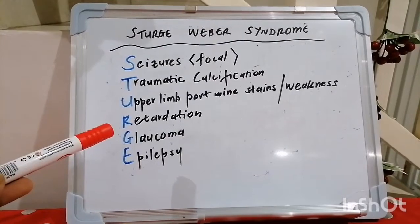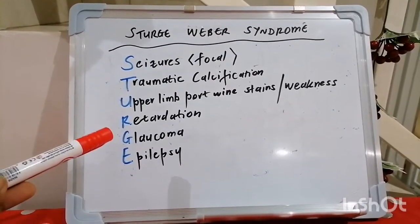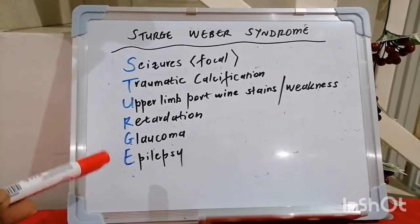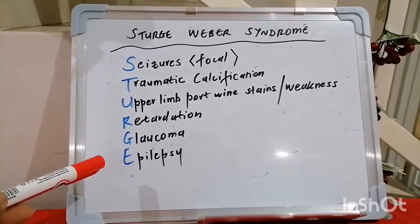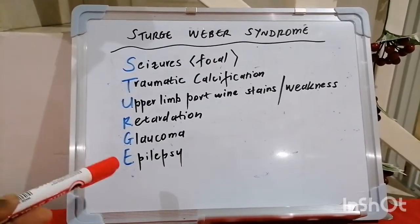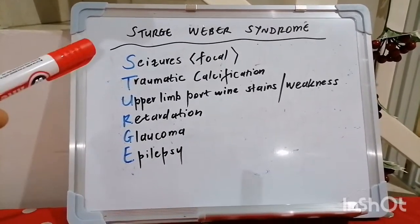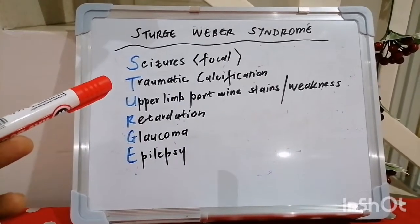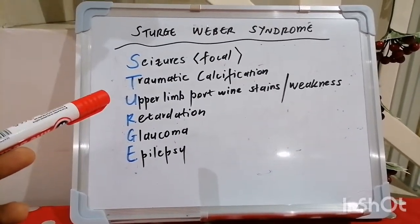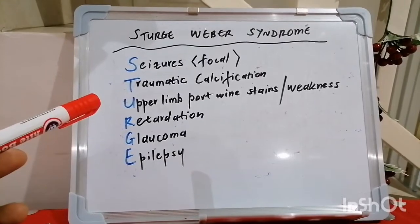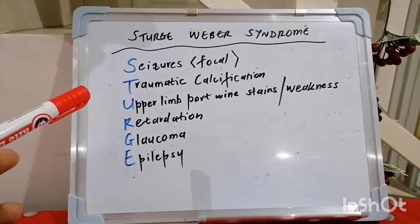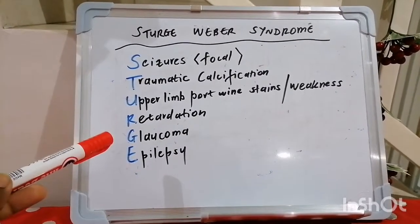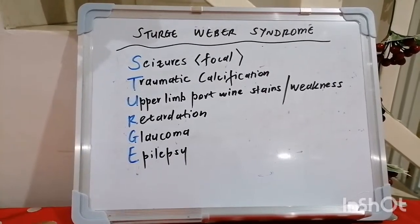So these are the clinical features of Sturge-Weber syndrome. Focal seizures — that's the S. T is for tram-track calcification. U is for upper limb port-wine stains, ipsilateral to the side that has a seizure, and weakness is contralateral. R is for retardation. G is for glaucoma. E is for epilepsy.